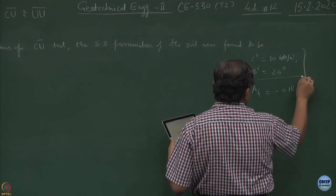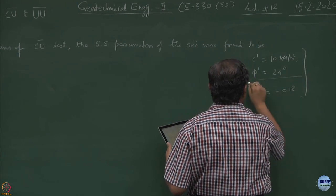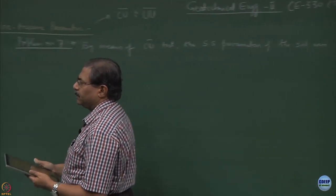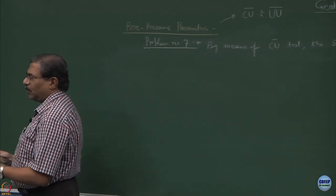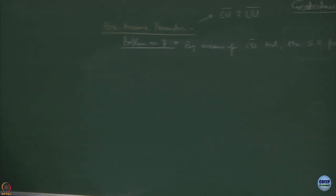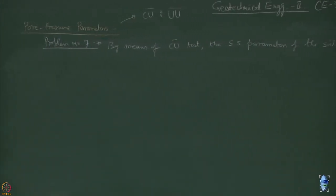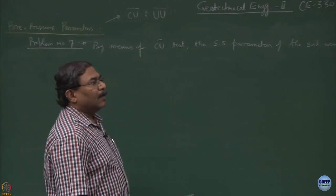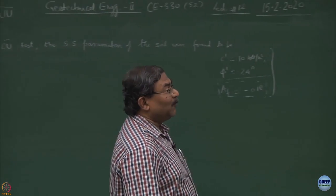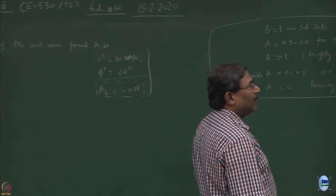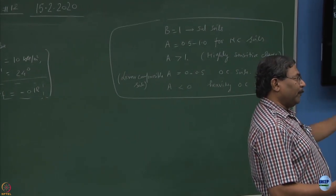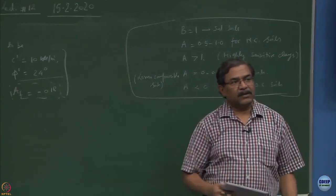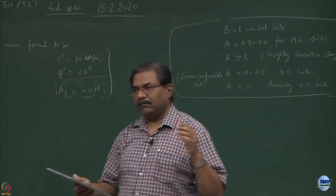Added to this is AF and what you are observing is a negative sign. What it corresponds to is a heavily overconsolidated material. Heavily overconsolidated material will always show you suction. So the pore water pressure which you are going to compute would be negative. This is a type of characterization of the soil mass.